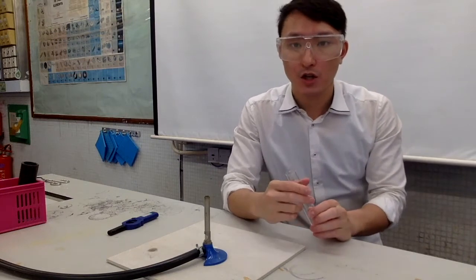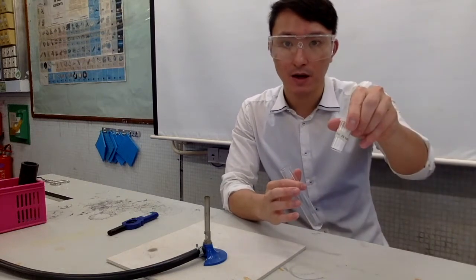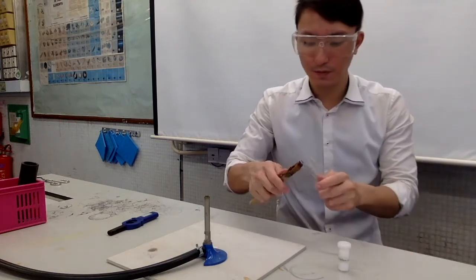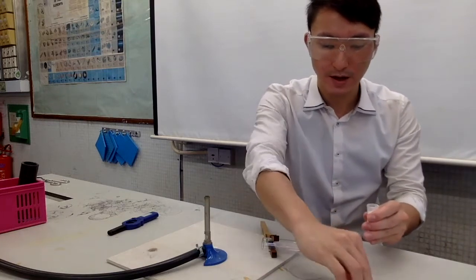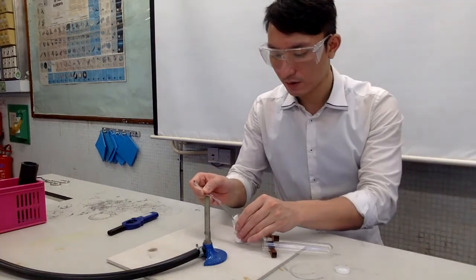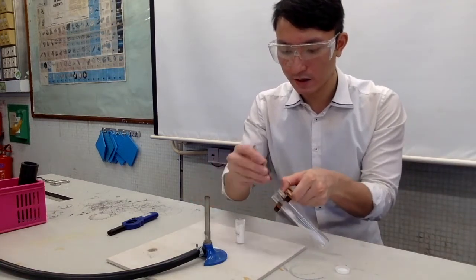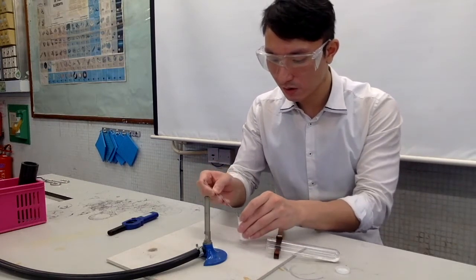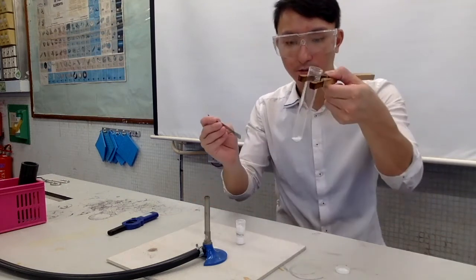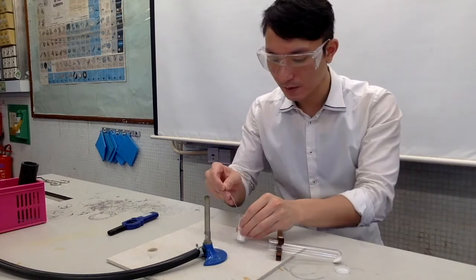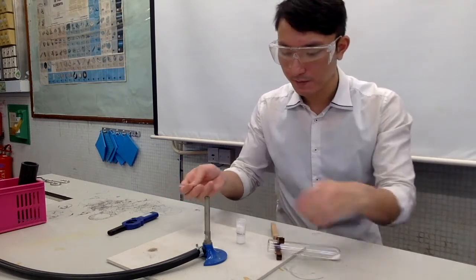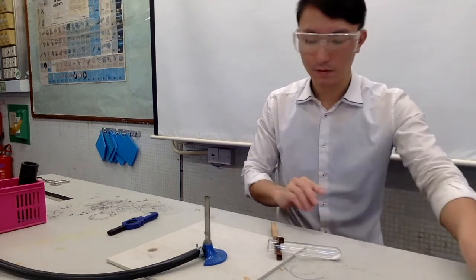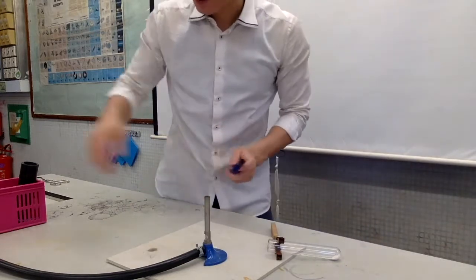This is calcium carbonate. We are going to add about three spatula measures of calcium carbonate — it doesn't have to be very accurate. One, two, three. That should do it, maybe a little bit more.